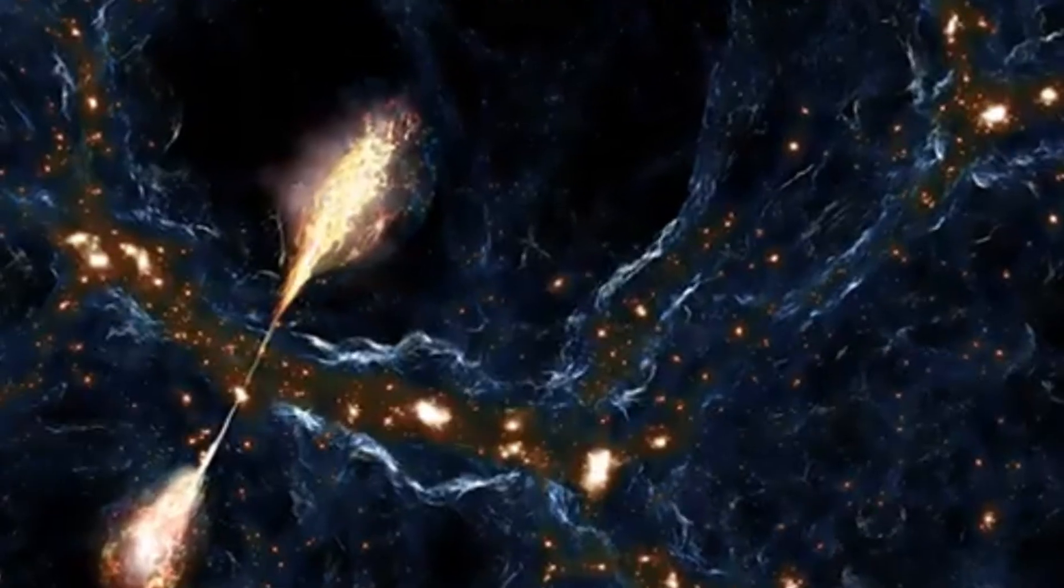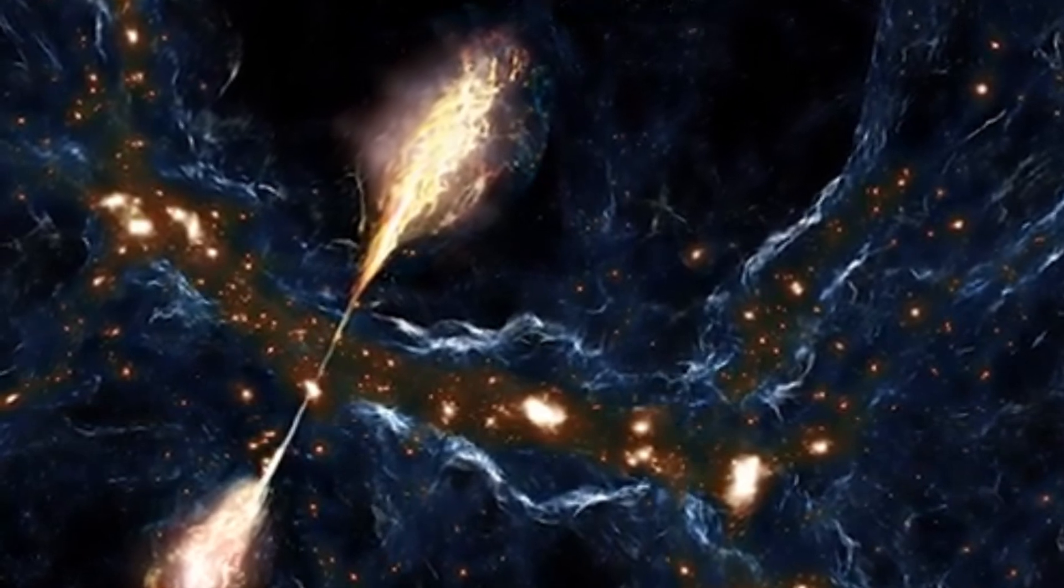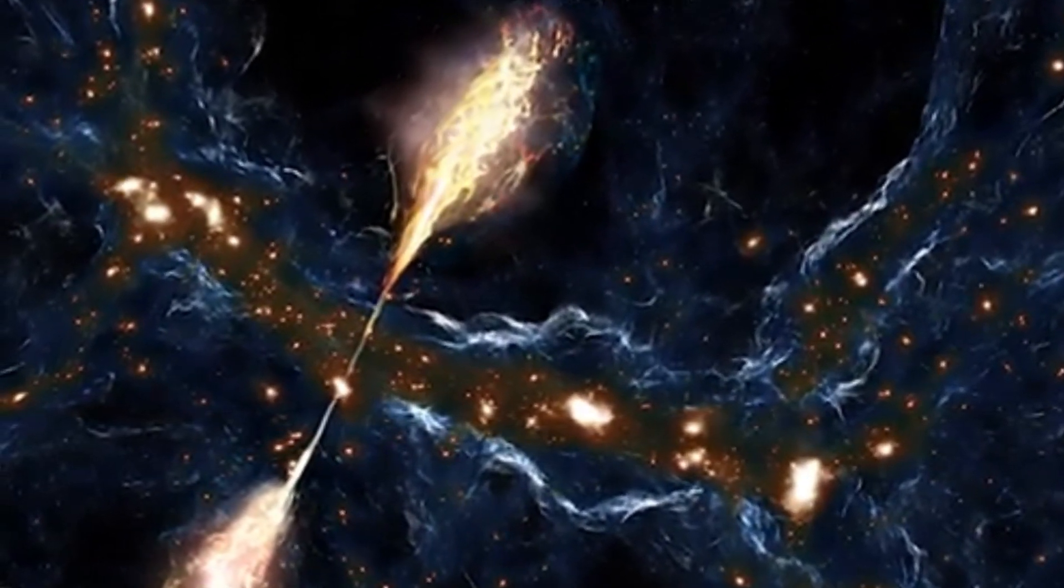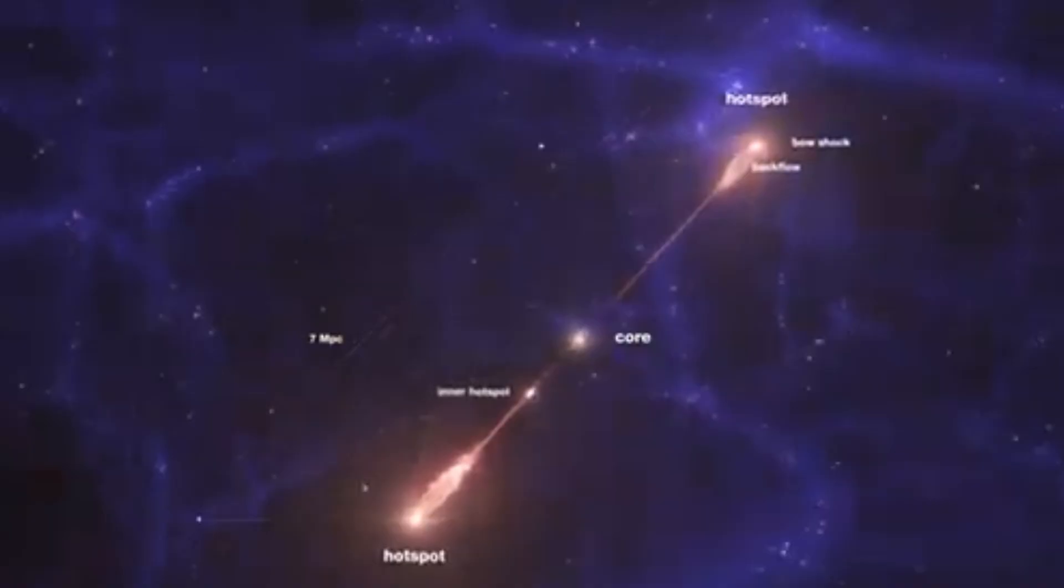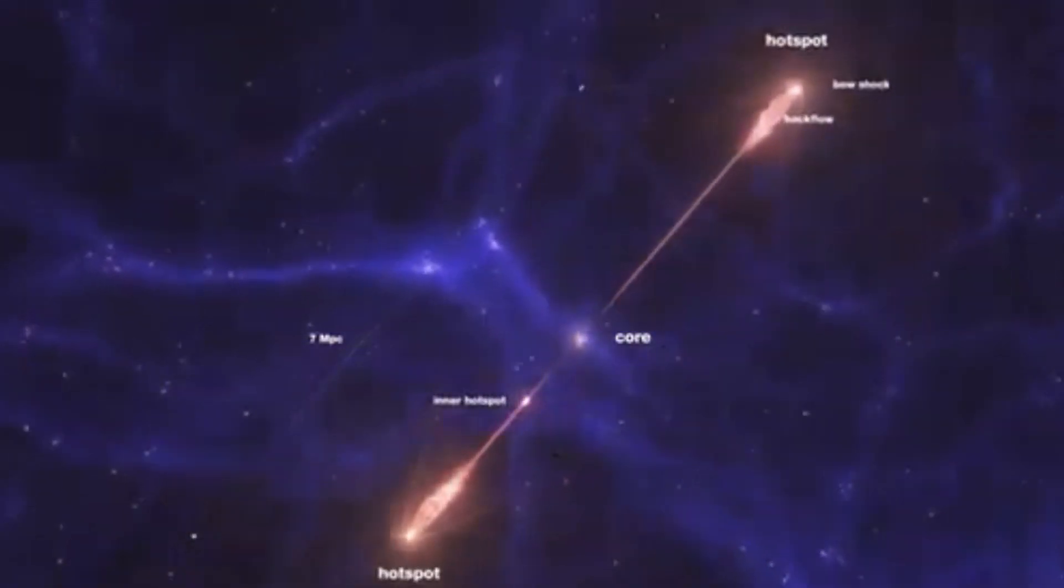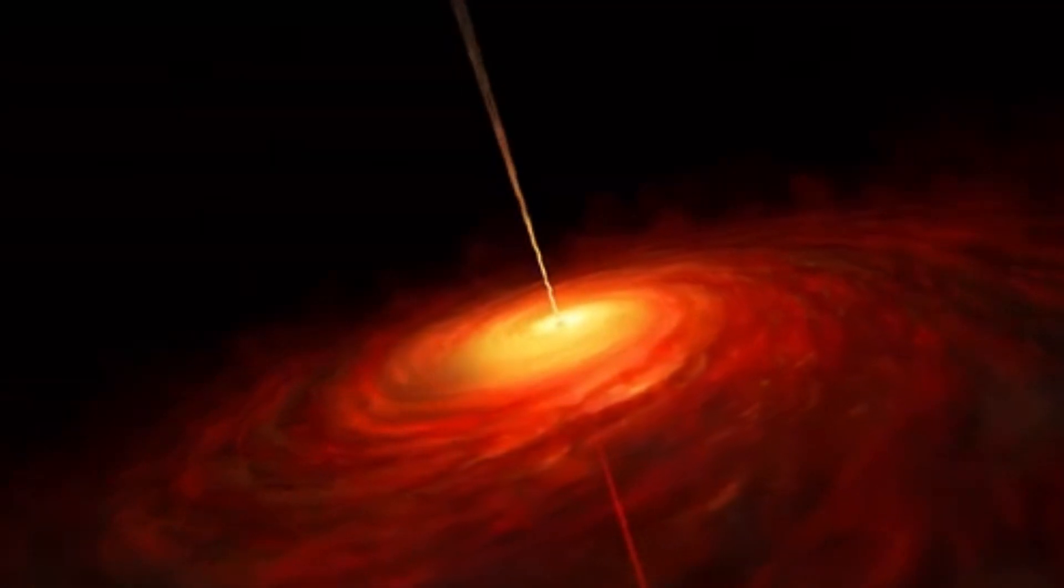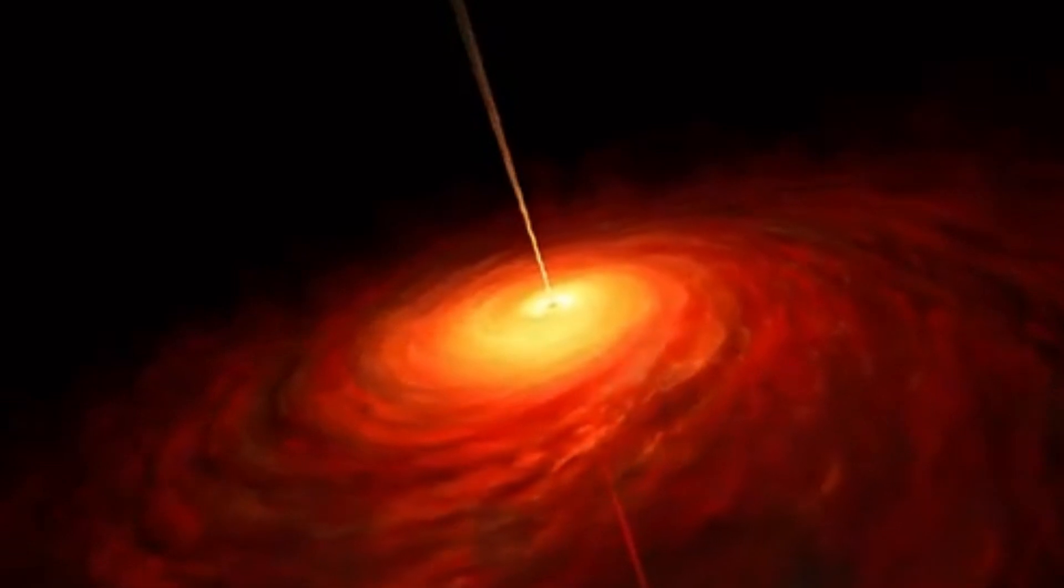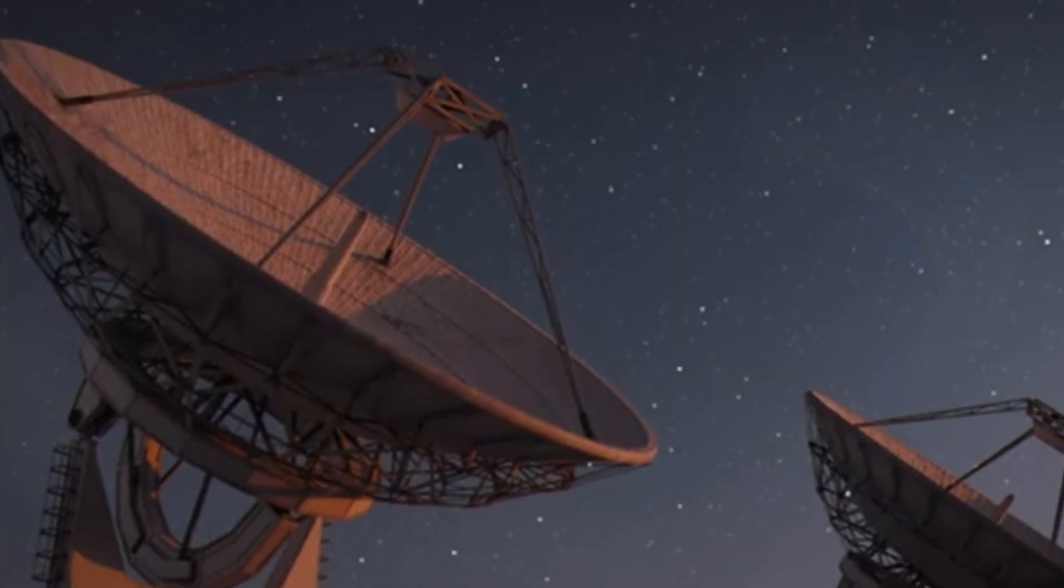The discovery of the Porphyrion black hole jets wasn't a simple point-and-click process. Scientists revealed this megastructure through the collective efforts of multiple cutting-edge telescopes and instruments, each playing a crucial role in piecing together this cosmic mystery. The journey began with Europe's LOFAR, low-frequency array radio telescope, which first spotted the faint signals of these massive jets. However, confirming something so enormous required more than just one tool.